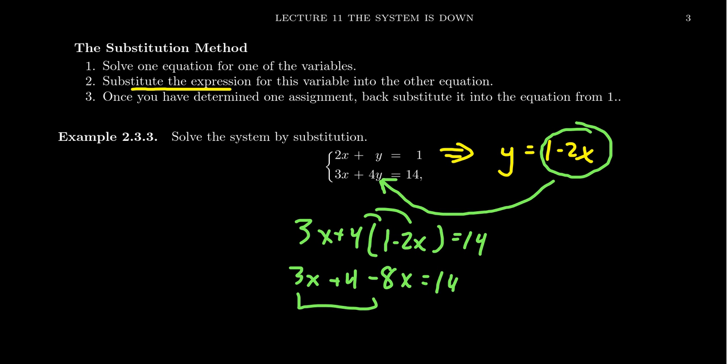We get 3x minus 8x, which is going to give us negative 5x. This is a plus 4 equals 14. I'm then going to subtract 4 from both sides. The 4 on the left is going to cancel out. We then get negative 5x equals 10. And then to finish off, divide by negative 5 because it'll cancel on the right. And we should then have that x equals negative 2.